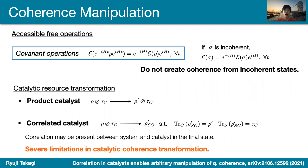If we are interested in the ultimate capability of coherence transformations, it is also reasonable to think about borrowing help from an ancillary system called a catalyst. A catalyst is an ancillary state that helps the transformation under the condition that the user promises to return the ancillary state back to its original state.